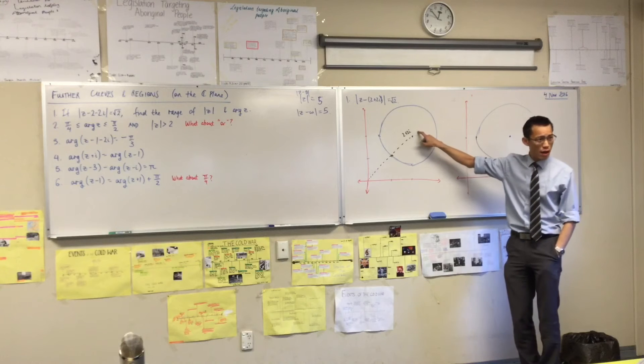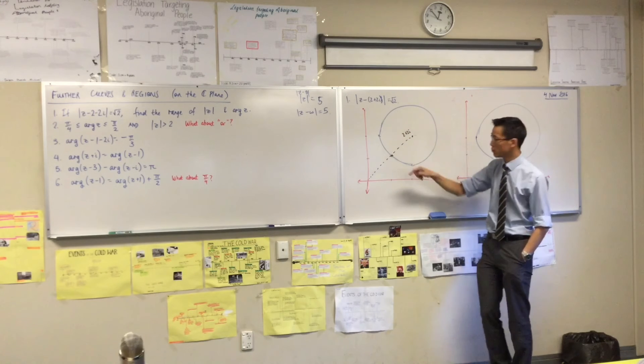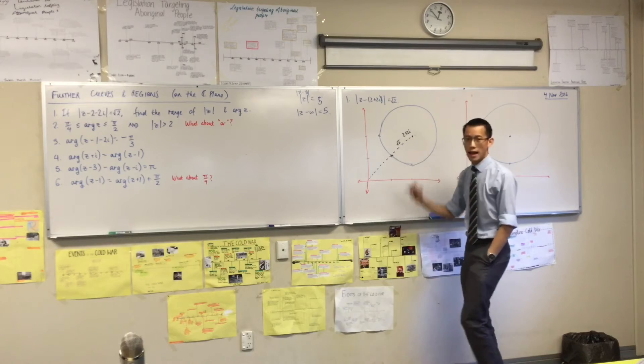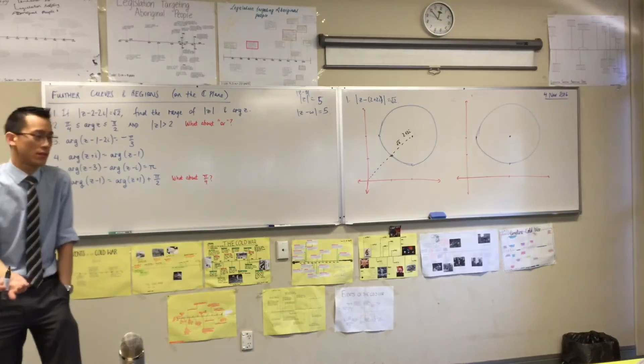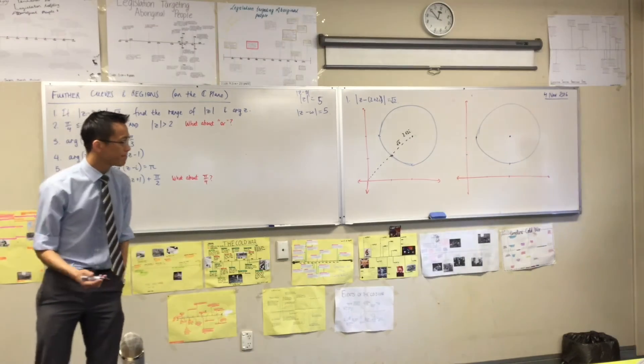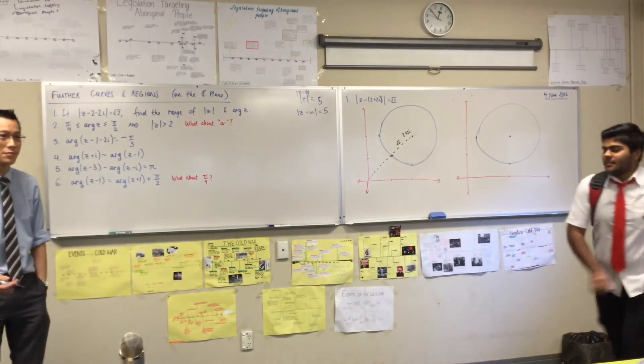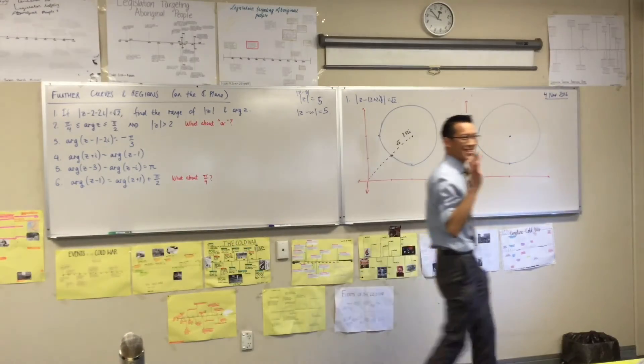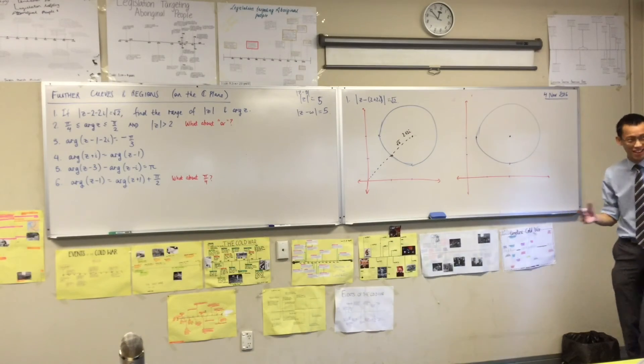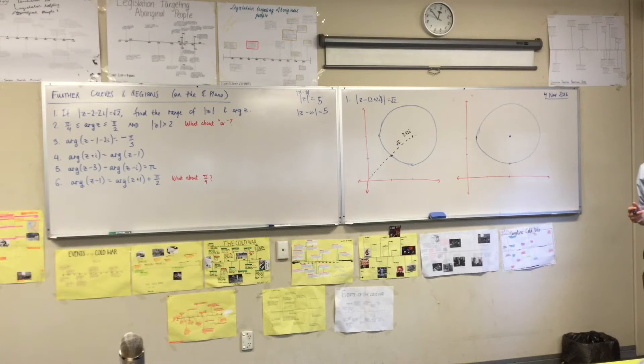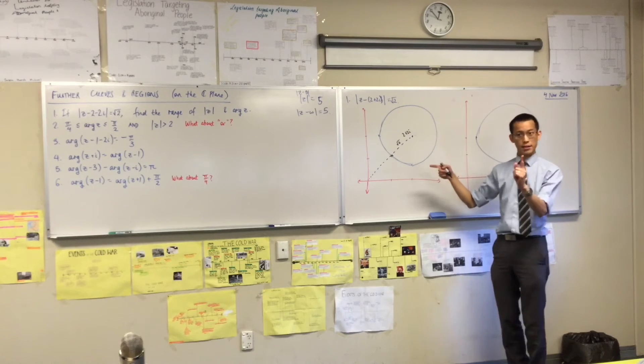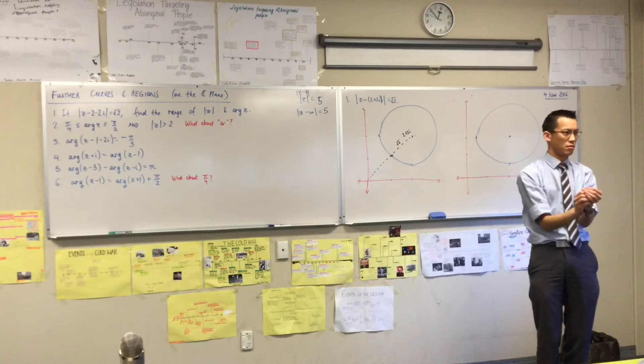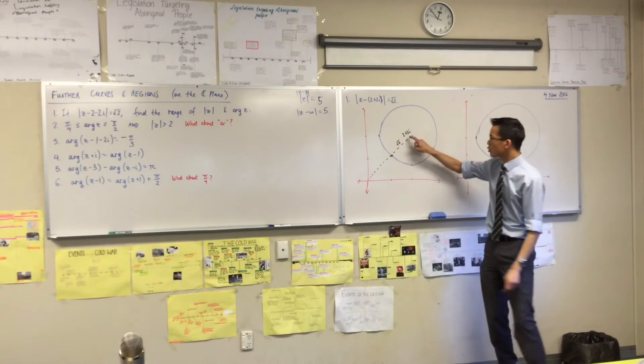If this is 2 plus 2i, and I know the radius of this circle, how can I use that to find out where that point is? Because once I know where the point is, finding the modulus is very easy. Sorry, I heard some vague, indistinct answers. Is anyone brave enough to actually think this might actually work for us? Is it 2 plus 2i minus root 2?